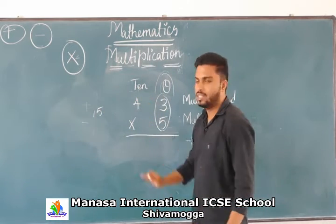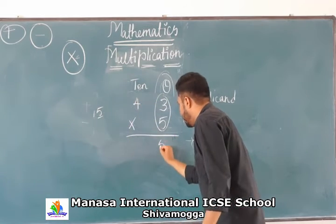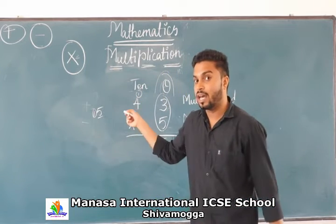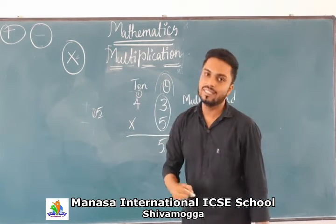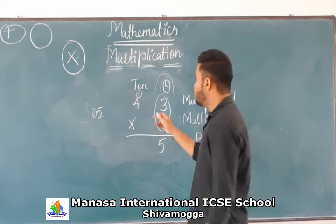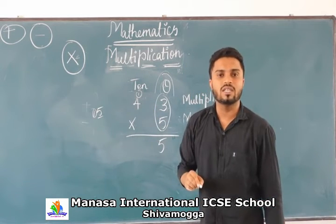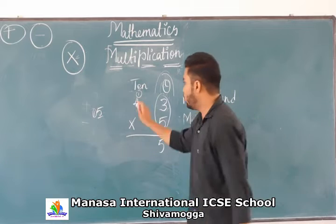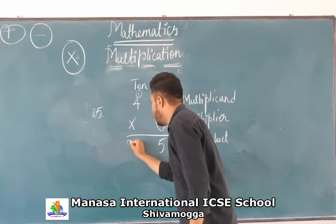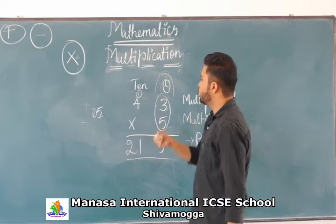As we have a number in the ten's place — the digit 1 — we will keep this 1 as carry. Carry comes in addition; borrow comes in subtraction. Now, 5 fours are 20. We add the carry: 20 plus 1 is 21. So this is the answer — the product you will get once you solve this is 215.